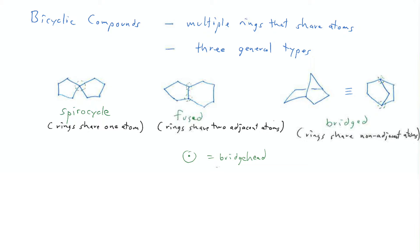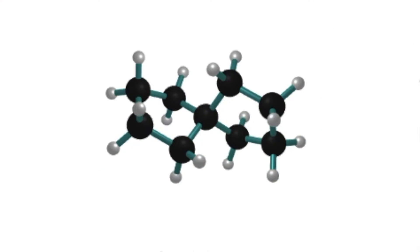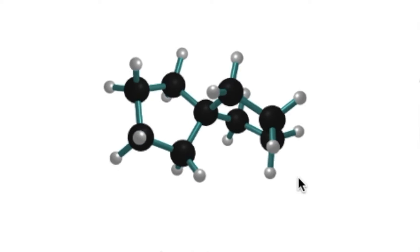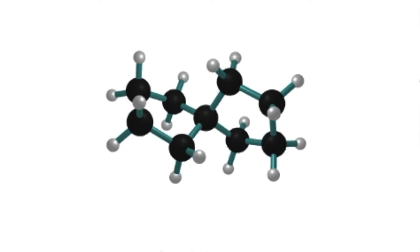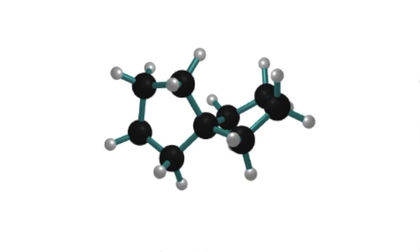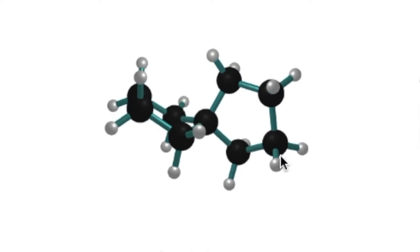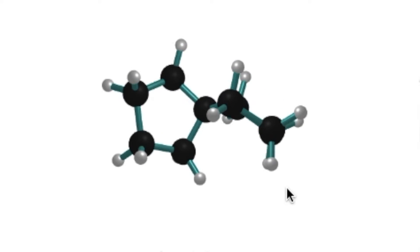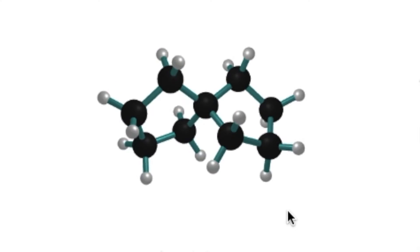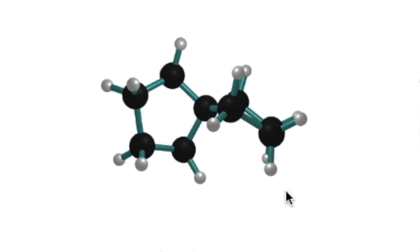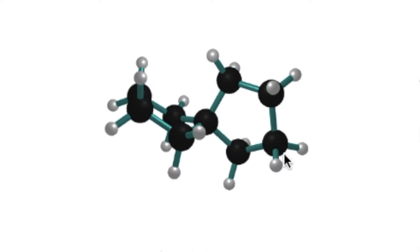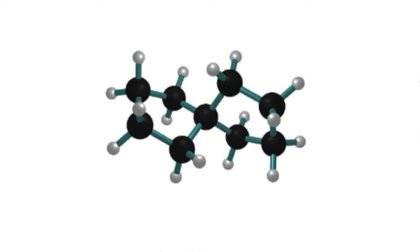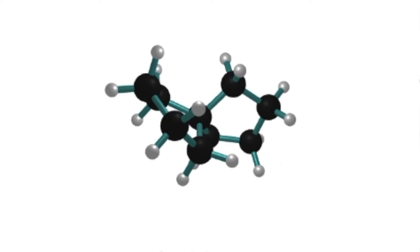Here you can see a 3D model of a spirocyclic compound. Note the tetrahedral shape of that central carbon. The two rings are essentially perpendicular to one another — they're puckered to relieve angle strain. Overall, you're looking at a molecule where that central carbon is in fact tetrahedral and the two rings are essentially perpendicular to one another.